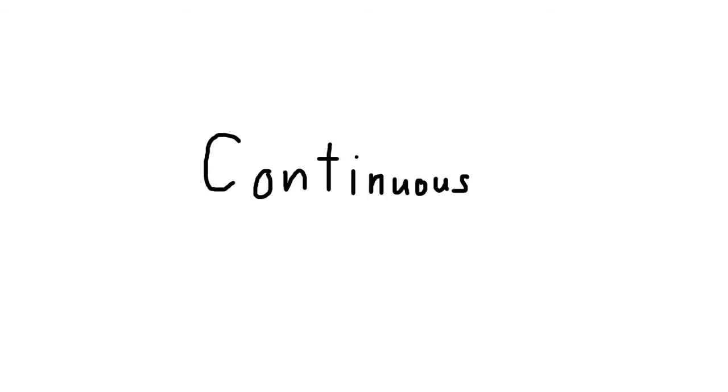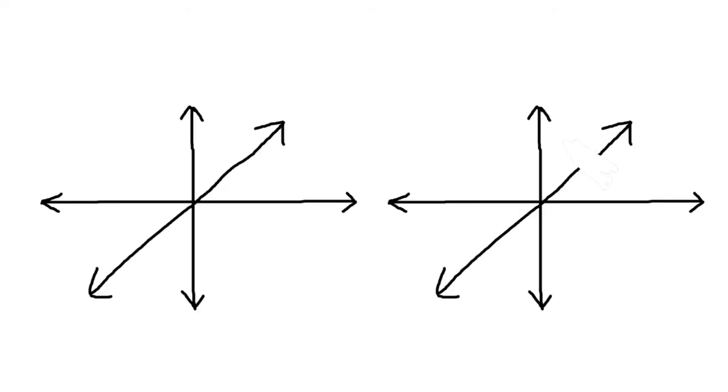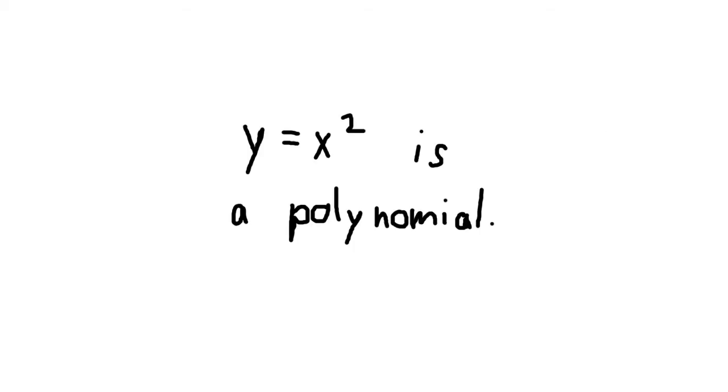Continuous just simply means that it's impossible to draw the graph without ever picking up the pencil that you used to draw it. The graph on the left is continuous, the graph on the right is not. Any polynomial expression creates a continuous graph, y equals x squared being one example.